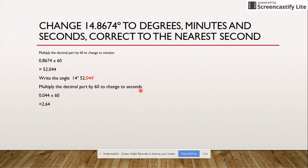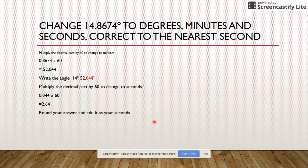What you need to do there is you need to round it. So 2.64 rounded to the nearest whole number will give you 3. We've done the 14, we've done the 52, and now round your answer and add it as your seconds. So now you've got 14 degrees, 52 minutes, and 3 seconds.